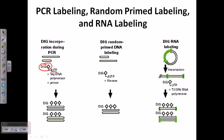The digoxigenin-dUTP is a very important factor — wherever a U is required during DNA synthesis, the DIG-dUTP will be incorporated. As a result, we get a region marked with DIG-dUTP. We can detect this DIG-dUTP after the process using a chemiluminescent technique. The stretch of DNA marked with DIG-dUTP is denatured to produce single-stranded DNA, which is then used as a probe, allowing us to detect the position of our gene via chemiluminescence.